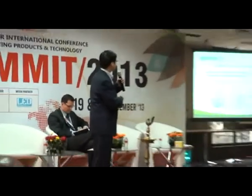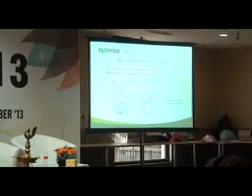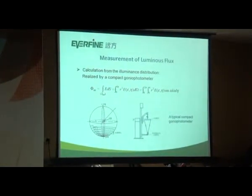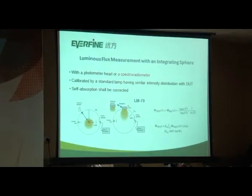A very important photometric quantity is total luminous flux. As we know, it can be calculated from integrating illuminance, as shown in this equation. This can be realized by using a compact gonio photometer. This method has very high accuracy but is a little time consuming. For more convenience, many laboratories will use an integrating sphere system with a photometer head or a spectral radiometer. However, it should be pointed out that in such a system, the error of self-absorption shall be corrected in the measurement result.